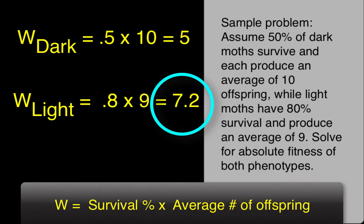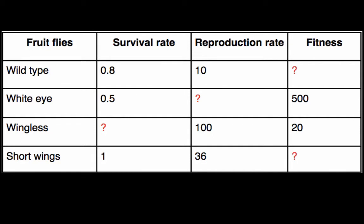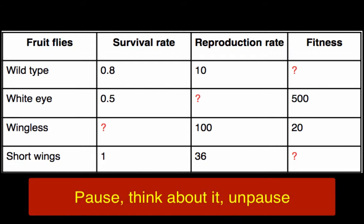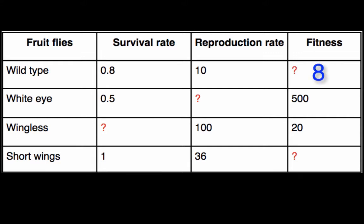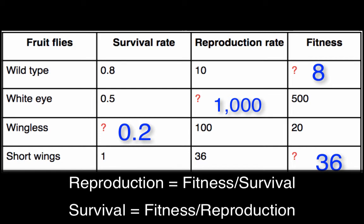Let's try some on your own. Knowing that survival rate times reproduction rate equals fitness, you should be able to solve for fitness, reproduction rate, or survival rate. Pause and solve for the question marks, then unpause when you're ready to see the answers. So 0.8 × 10 gives us a fitness of 8. You can use algebra to solve for the others: reproduction rate equals fitness divided by survival rate, and survival rate equals fitness divided by reproduction rate.